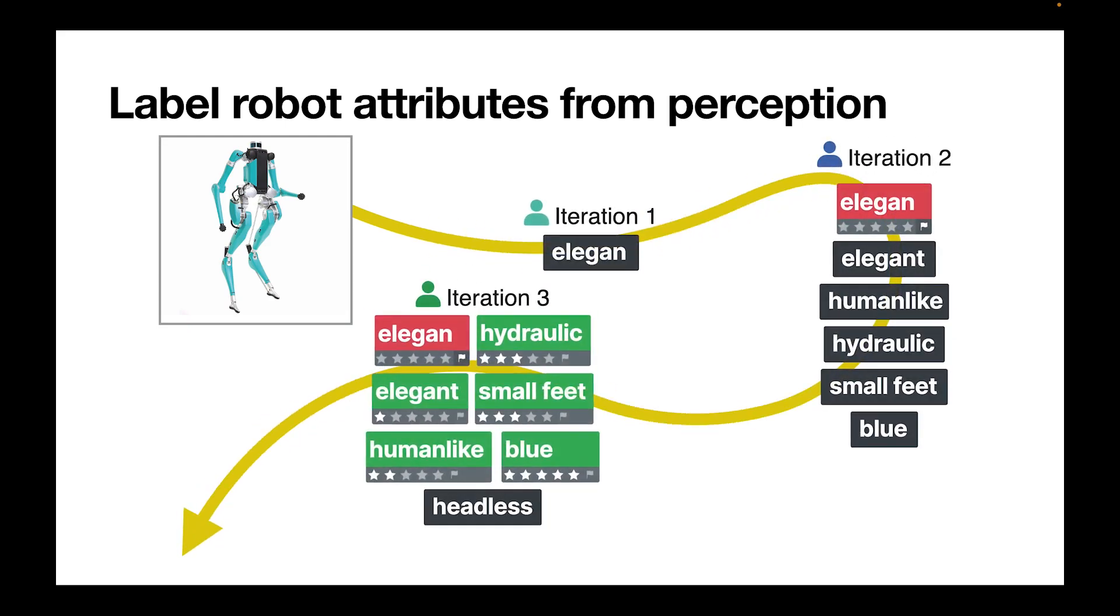So here we start off with an image of a robot. And people can provide new tags. People can also flag tags. And if they're flagged twice, so for example, elegant here, which is a typo, they also go out of the pipeline.